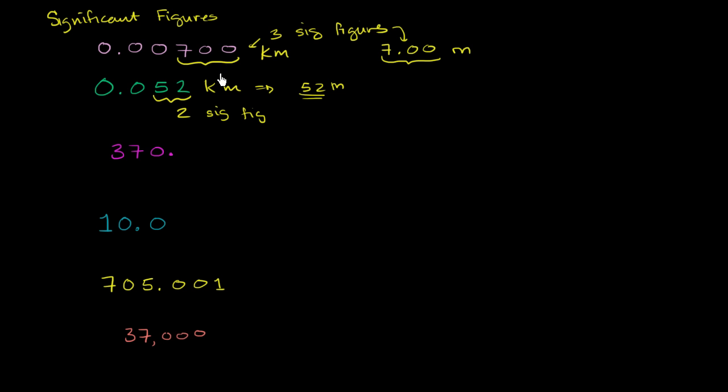So over here, the person did 370 and then they wrote the decimal point. If they didn't write the decimal point, it would be a little unclear on how precise this was. But because they wrote the decimal point, it means that they measured it exactly to be 370. They didn't get 372 and then round down, or they didn't have a roughness only to the nearest tens place. This decimal tells you that all three of these are significant. So this is three significant figures over here.